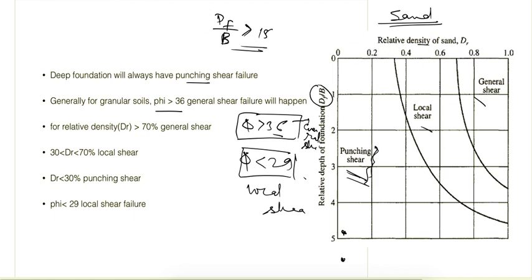Regarding relative density: if relative density is less than 0.3, then only punching shear failure occurs. Between 30% and 70% relative density, local shear failure occurs. Above 70% relative density, general shear failure occurs.